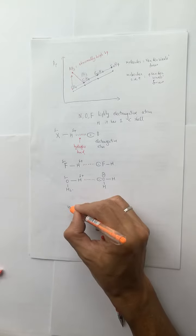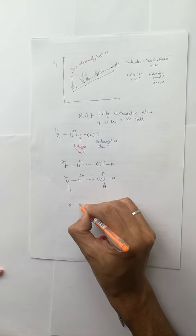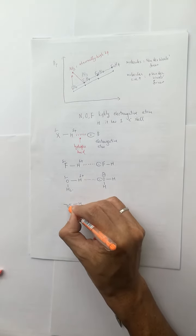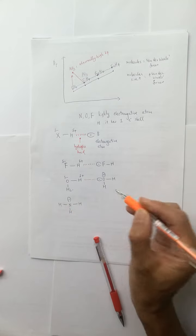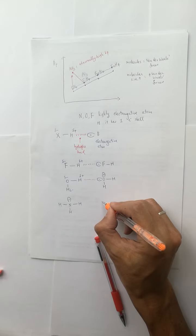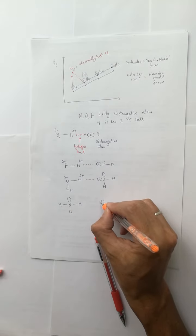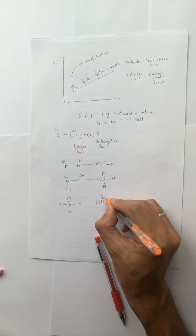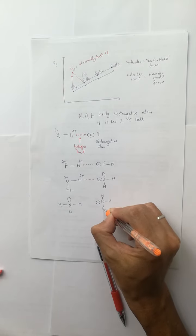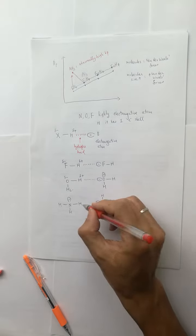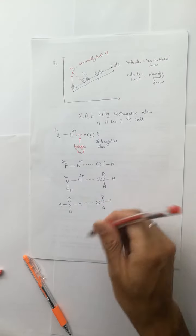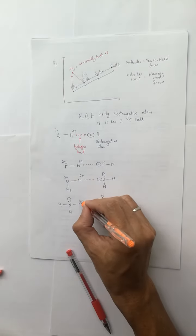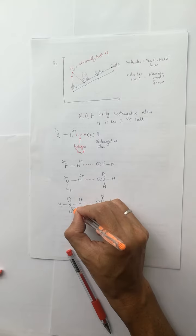Lastly, N, ammonia, has three H and one non-pair electron. Another molecule of ammonia's non-pair electrons has attraction to the hydrogen atom.